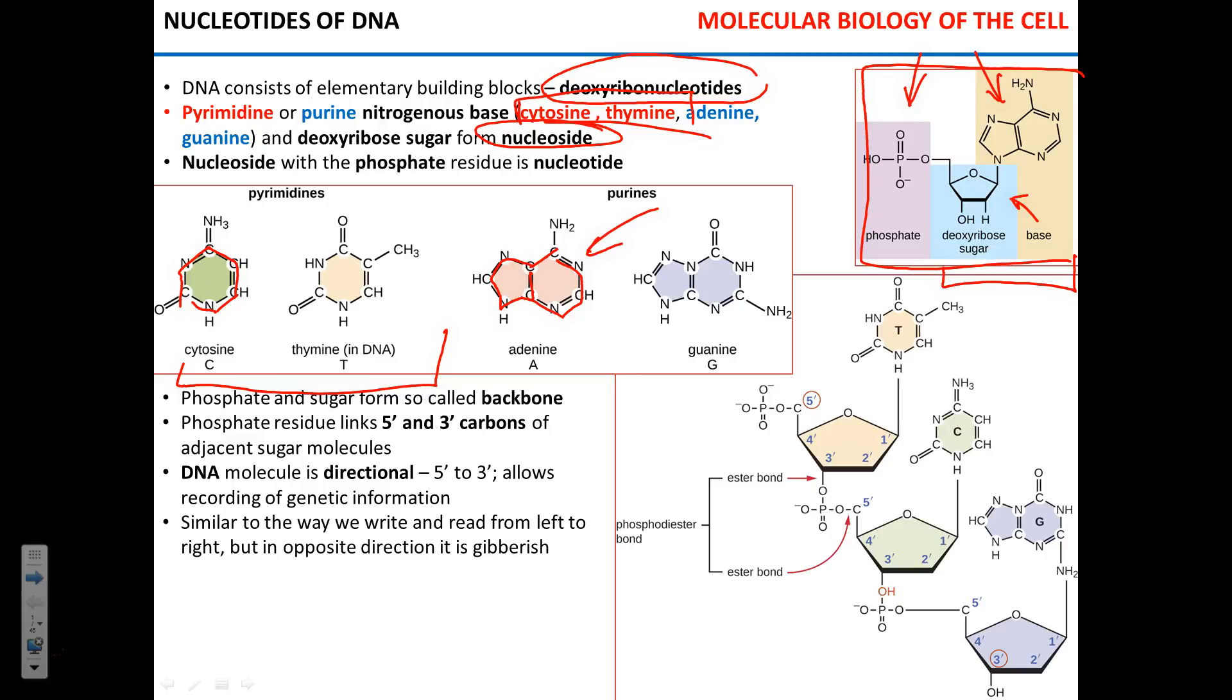So we have two major classes, purines and pyrimidines. Adenine and guanine, purines, cytosine and thymine are pyrimidines. Now the sugar is called deoxyribose. Deoxy, because there is no oxygen here in the two prime position. If you will compare deoxyribose to ribose, ribose is going to have this here, the hydroxyl group. We will have a chance to compare them.